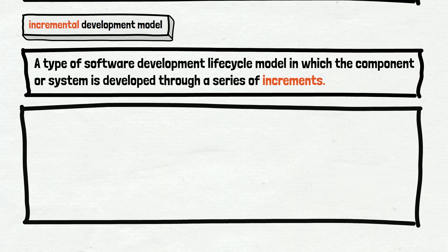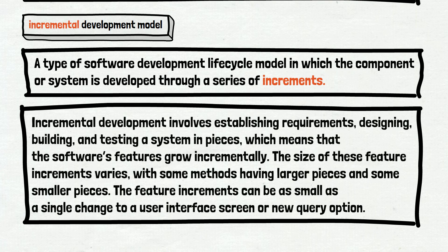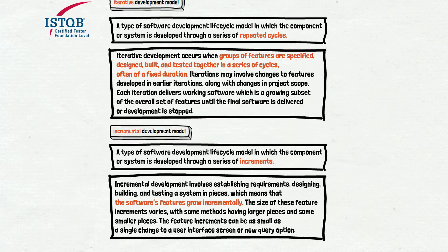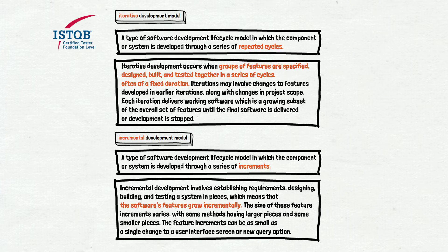Let's check what ISTQB says about the incremental development model. Again, there is not much information about it. The main sentence is: the software's features grow incrementally. To summarize: iterative development develops features in iterations; incremental development develops features in increments — which is logical but doesn't explain what we want to know. Instead of going around in circles and getting lost in theory, it becomes clear with an example.